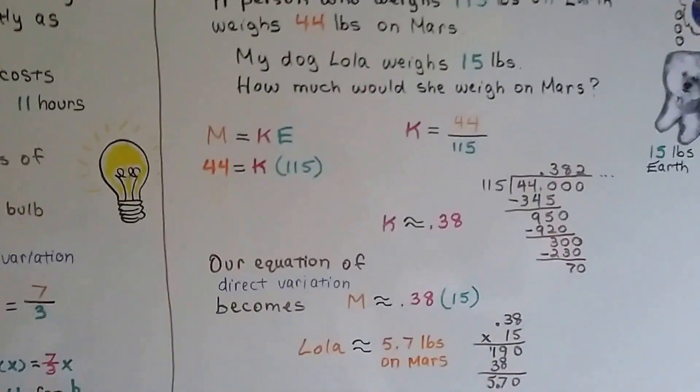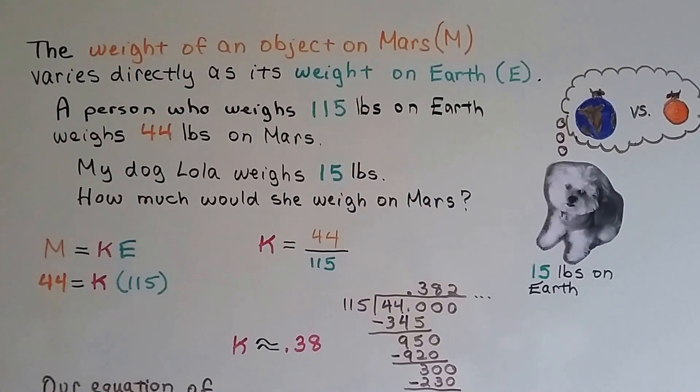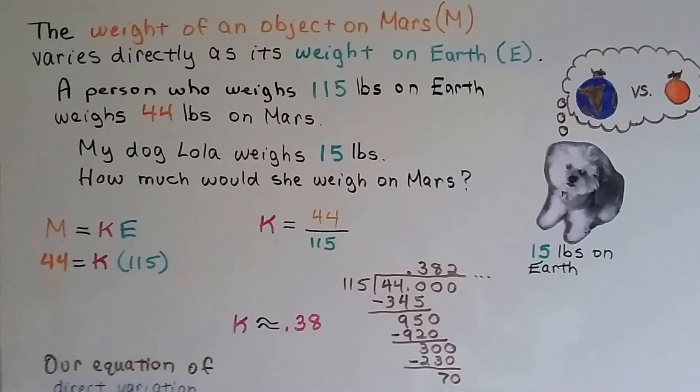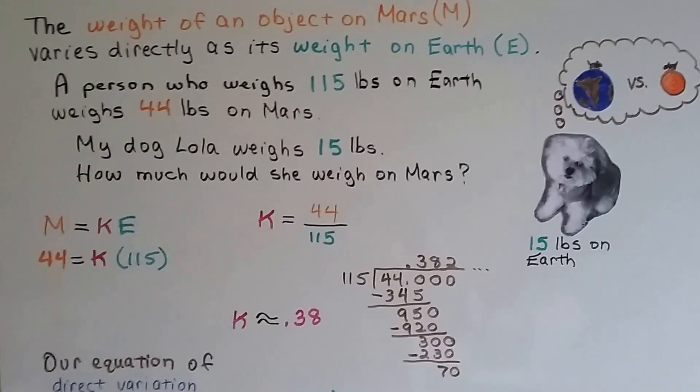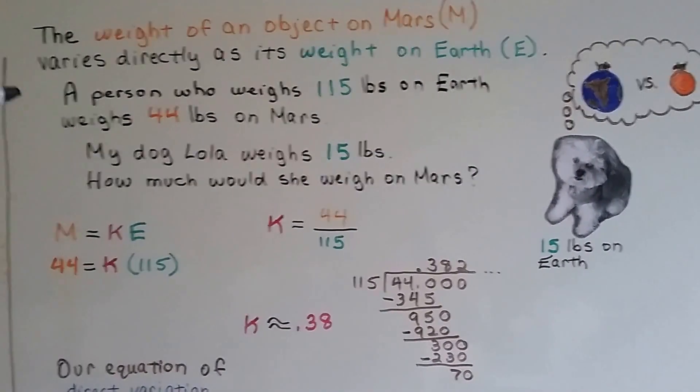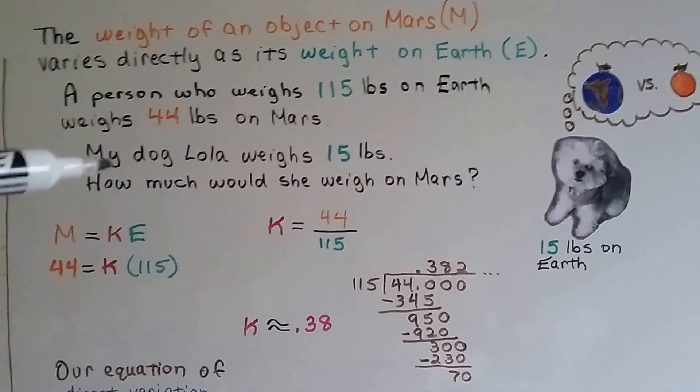How about this one? The weight of an object on Mars, M, varies directly as its weight on Earth, E. A person who weighs 115 pounds on Earth weighs 44 pounds on Mars. My dog Lola weighs 15 pounds. How much would she weigh on Mars? We're going to use the information from this part of the word problem to help us solve Lola's part.